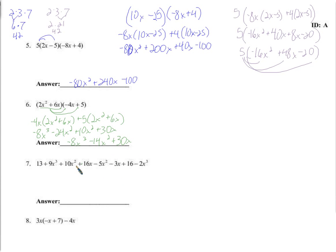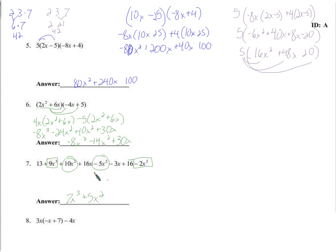Finding the like terms — there's a cube here and a cube there, so 9x cubed minus 2x cubed is 7x cubed. Then 10x squared and negative 5x squared — that's positive 5x squared. And 16x and negative 3x combine to give 13x. So the result is 7x³ plus 5x² plus 13x.